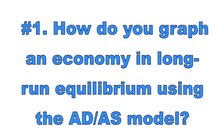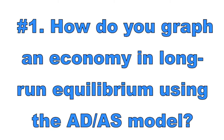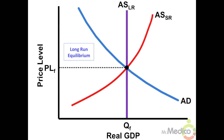Number one: how do you graph an economy in long-run equilibrium using the aggregate demand and aggregate supply model? To graph a long-run equilibrium, use the ADAS model, which illustrates an entire economy's total demand and total supply. The SRAS, LRAS, and AD curves should intersect at the same spot. Price level is on the y-axis, real GDP on the x-axis. The economy is fully employed at its natural rate of unemployment with zero cyclical unemployment.